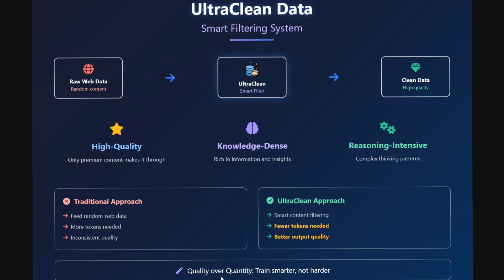Next is ultra clean data - a smart filtering system used to clean out raw web data. The dataset is high quality, knowledge-dense, rich in information, and reasoning-intensive with complex thinking patterns. In a traditional approach, random web data is fed to the model requiring more tokens and leading to inconsistent quality. With the ultra clean approach, smart content filtering means lesser data is required and better outputs are produced.